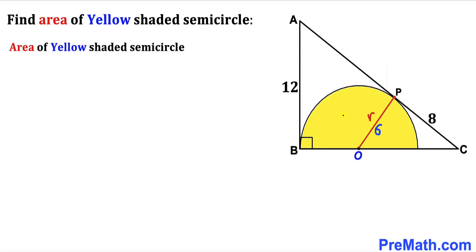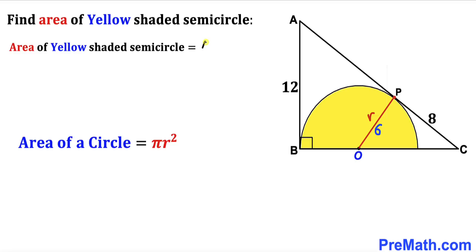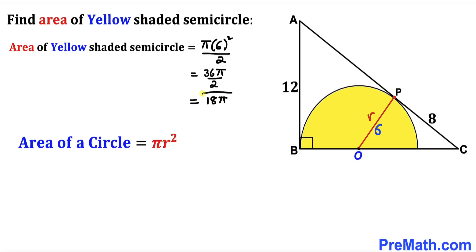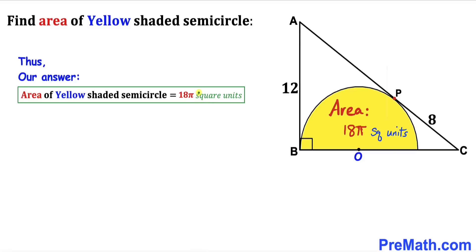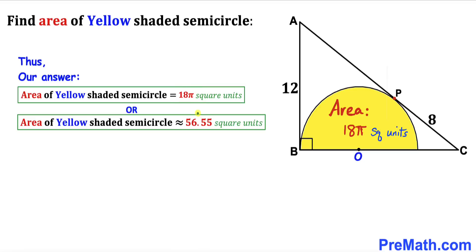Now for the final step: calculating the area of the yellow shaded semicircle. The area of a full circle is πr². For our semicircle, the area equals π × 6² divided by 2, which gives 36π/2 = 18π square units. This is approximately equal to 56.55 square units. Thanks for watching and please don't forget to subscribe to my channel for more exciting videos.